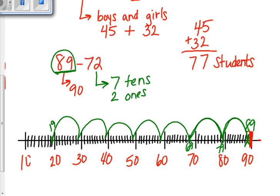Now all I have to do is subtract two more ones. My answer, if I count up, is 10, 11, 12, 13, 14, 15, 16, 17. So how many students were absent? 17 students, and that is my final answer.